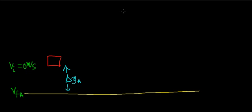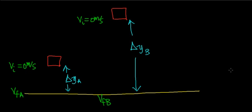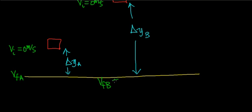My question is: how high would I have to drop that same object from in order for it to double its velocity? So if this object also starts from rest, how high would I have to drop it — let's call this delta y of case b — in order for its final velocity of b to be twice the final velocity of object a? In this session I'd like to derive a general case, and then we'll take a look at a specific case in the next video.